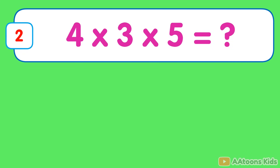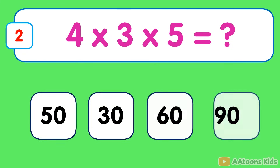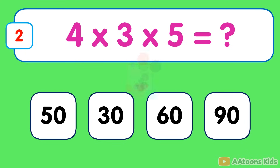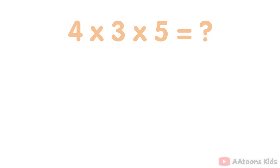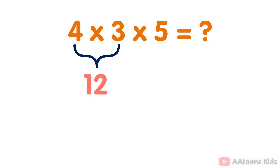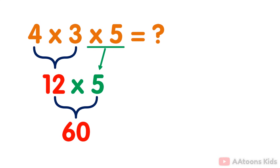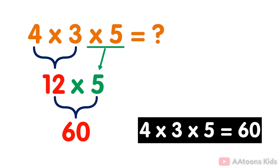4 multiplied by 3 multiplied by 5. The answer is 60. Simply multiply the numbers 4 and 3 which equals 12. Then you multiply the result 12 by 5. You will get 60. Therefore, the answer to 4 multiplied by 3 multiplied by 5 is 60.